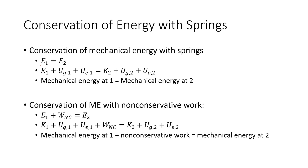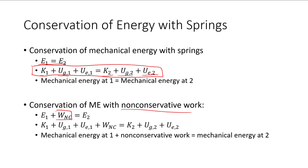If there is no non-conservative work, then our total mechanical energy at the beginning equals total mechanical energy at the end, which means kinetic plus gravitational potential plus elastic potential at one point equals kinetic plus gravitational potential plus elastic potential energy at another point. If we do have non-conservative work, we incorporate that term: total mechanical energy at the beginning plus non-conservative work equals total mechanical energy at the end. It's just another type of energy we're keeping track of.